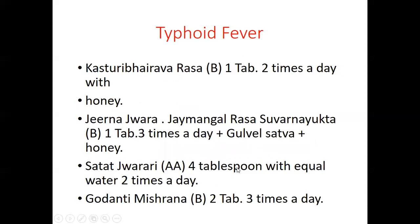The last Ayurvedic prescription for typhoid fever: Kasturi Bhairav Ras (Baidyanath Company), one tablet twice a day with honey. For chronic fever (Jeerna Jwara), advise Jaya Mangala Rasa Suvarna Yukta — with gold — one tablet three times a day with Guduchi Sattva and honey. For Satata Jwara, Satata Jwarantaka liquid, four teaspoons with equal water twice a day, and Godanti Mishrana, two tablets three times a day.